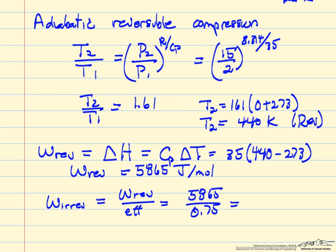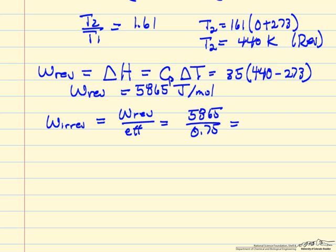It's the reversible work divided by the efficiency because we know when we're adding work to an irreversible process, it's going to take more work. So the irreversible work must be greater than the reversible work. And the number is 7820 joules per mole.